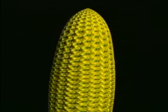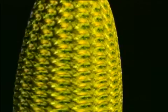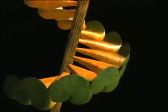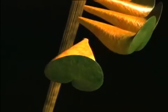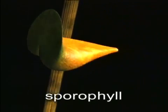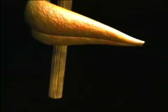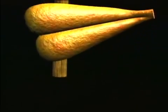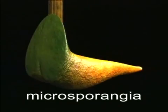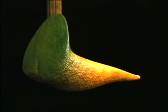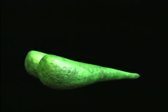The pollen cone consists of many small scale-like parts arranged in numerous spirals. Each scale in a single spiral is called a sporophyll and is attached to the central cone axis. On the underside of each sporophyll there are two microsporangia. An outer epidermis covers the sporophyll and its sporangia.